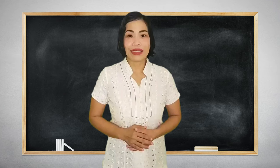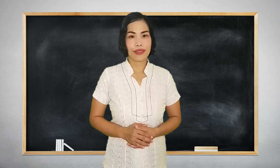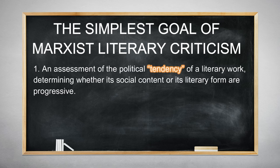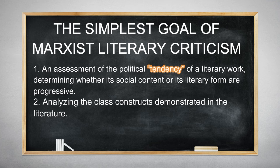What are the goals of Marxist literary approach? The simplest goals of Marxist literary criticism include the following: first, an assessment of the political tendency of a literary work, determining whether its social content or its literary form are progressive; second, analyzing the class constructs demonstrated in the literature.